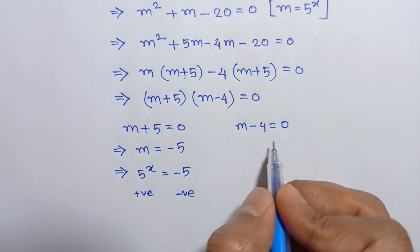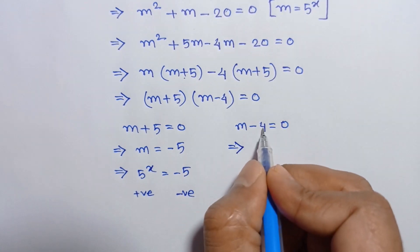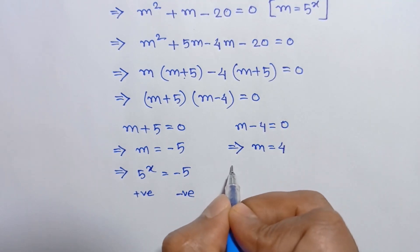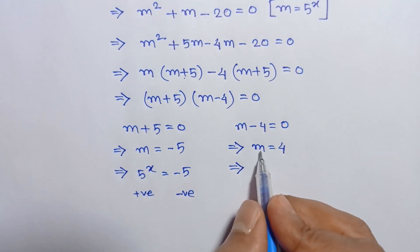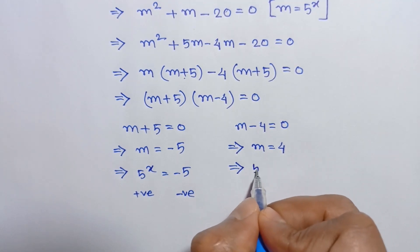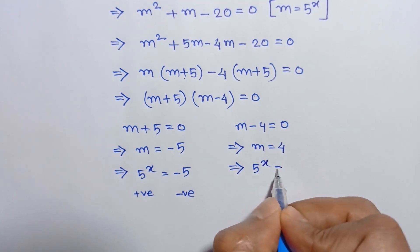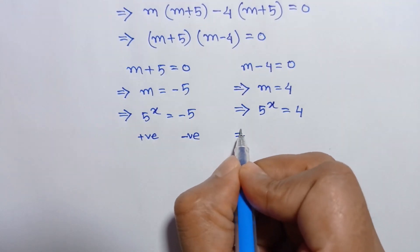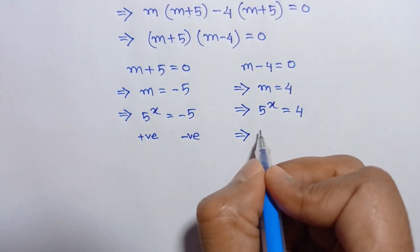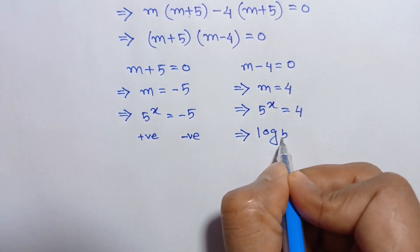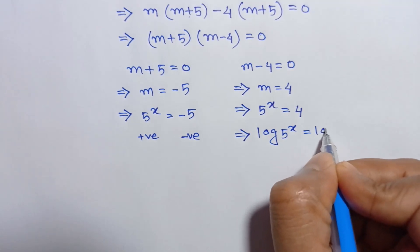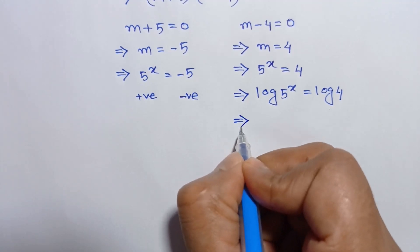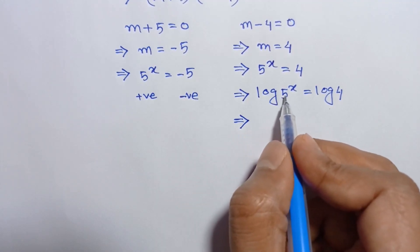Now when m minus 4 is equal to 0, taking 4 to the right side we will have m is equal to 4. Substituting the value of m, which is equal to 5 to the power x, we will have 5 to the power x is equal to 4. Taking log of both sides, we can write log 5 to the power x is equal to log 4.